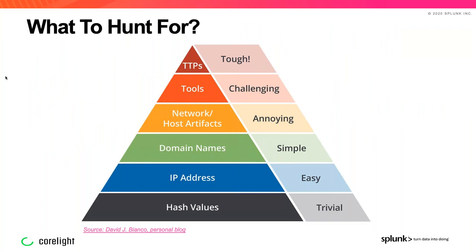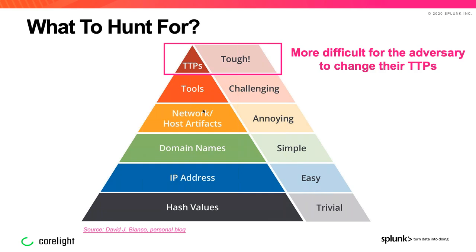How do we start hunting and what do we hunt for? This pyramid illustrates the challenges and value of hunting attackers' TTPs — tactics, techniques, and procedures. The stuff at the bottom, like a hash or an IP, is low-hanging fruit: quick and easy to check but of limited value. It's trivial for an adversary to change those indicators once discovered. The further up the stack you identify an adversary, the greater the payback, because it becomes much more difficult for them to change their TTPs. That's where the hunting focus should be.